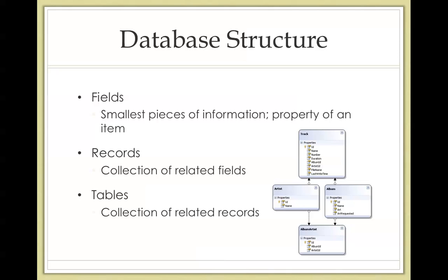Finally, a table is a collection of records that are all the same. For example, the record of the single employee would be placed under a table specifically for employees only. So essentially they're all related. Fields are the smallest pieces of information, records come after, and then tables are the largest and most broad.